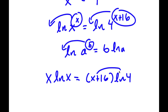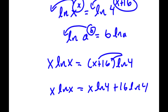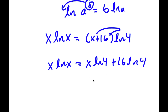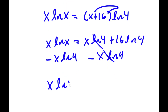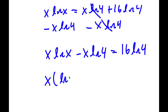Distributing ln 4 gives x times ln 4 plus 16 times ln 4. Subtracting x times ln 4 from both sides, those two cancel and I get x times ln x minus x times ln 4 equals 16 times ln 4. Factoring out x gives x times (ln x minus ln 4) equals 16 times ln 4.